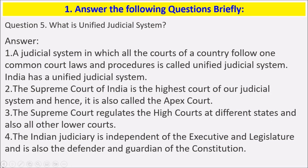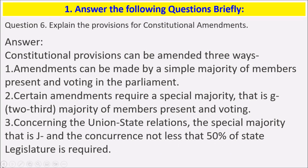Next: explain the provisions of constitutional amendments. Constitutional provisions can be amended in three ways. Amendments can be made by a simple majority of members present and voting in the Parliament. Certain amendments require a special majority, that is, a two-thirds majority of members present and voting.